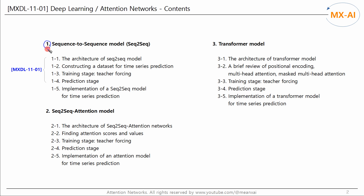In Chapter 1, we will look at a sequence-to-sequence network model consisting of an RNN encoder-decoder. First, let's look at the architecture of this model, and how to create a time series dataset to train it. This dataset will also be used for the attention model and transformer model in Chapters 2 and 3. We'll look at the training and prediction stages, including a method called teacher forcing, and implement this model to predict a time series.